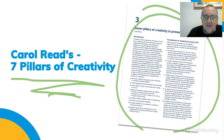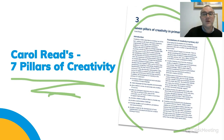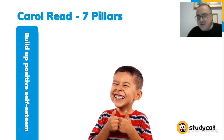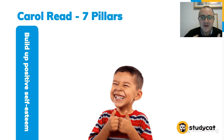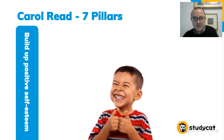The first pillar is about building positive self-esteem. Unhappy students sitting in rows are not going to be creative. Students need to have a positive environment and feel good about themselves to be creative. The first step for any teacher is to create that environment where kids feel like they want to be creative.